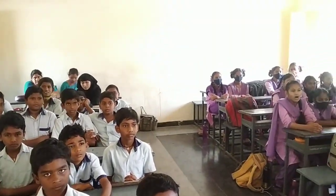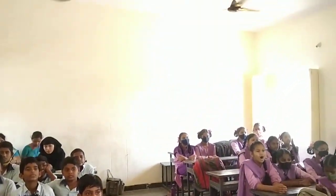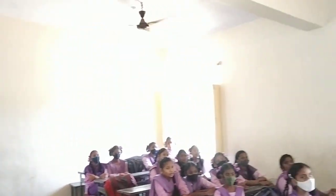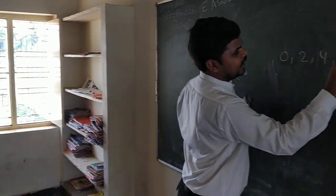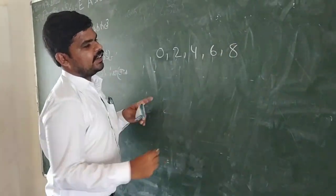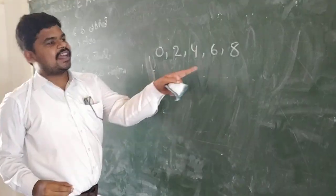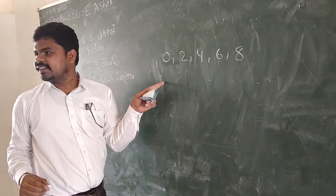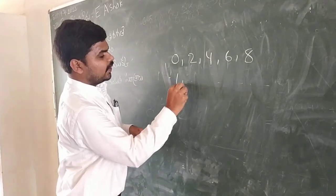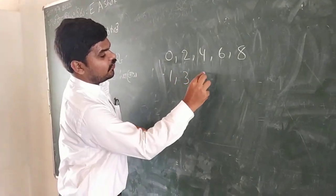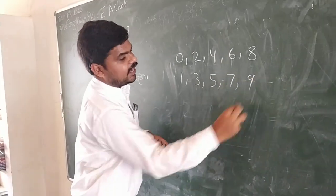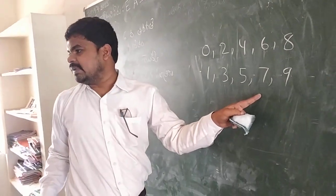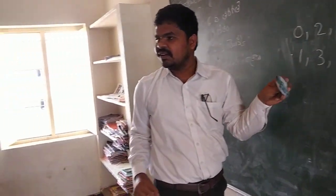So, what are we going to do? Two, zero — how do we get zero? Two, four, six, eight. These are even numbers. One, three, five, seven, nine. These are all odd numbers. Very good.